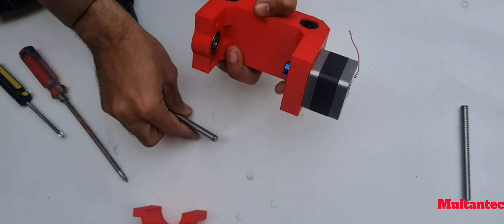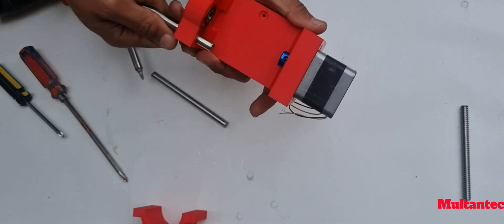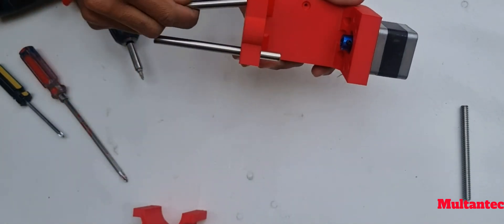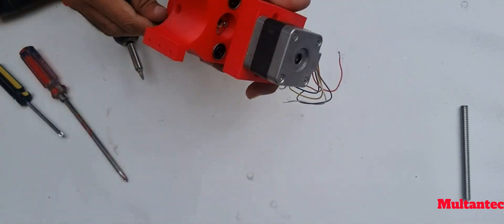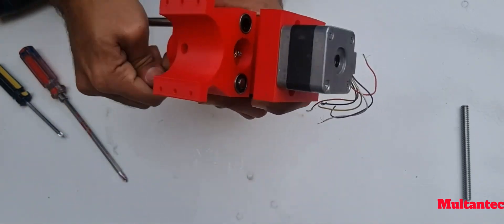Two 8mm smooth rod 110mm long inserted from the bottom holes of Z-axis. Now put the spindle mount on rods and gently press the rods inside the spindle holder bearings.